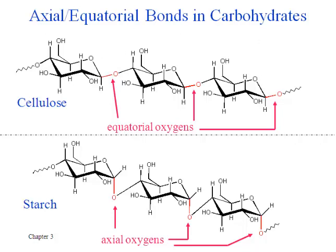In cellulose they are interconnected through an equatorial bond to an oxygen, whereas in starch that same bond is axial. And that's the only difference in these two different materials, as different as they are.